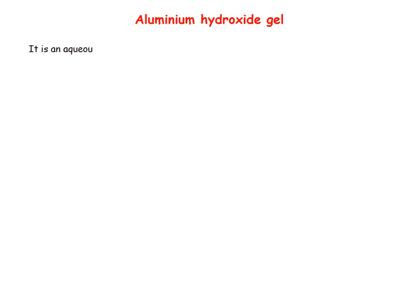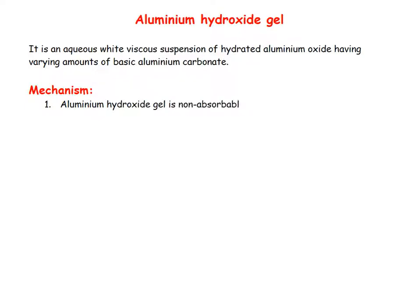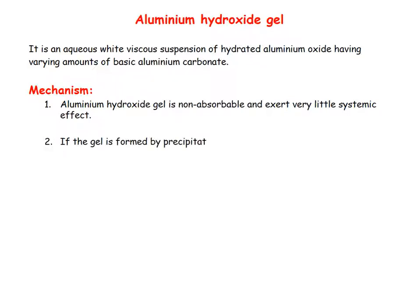Aluminium Hydroxide Gel is an aqueous white viscous suspension of hydrated aluminium oxide having varying amounts of basic aluminium carbonate. Aluminium hydroxide gel is non-absorbable and exerts very little systemic effect.